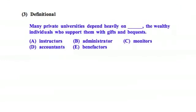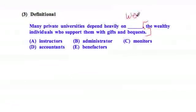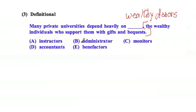The third type, definitional, is like a similar construction. For example: 'Many private universities depend heavily on blank, the wealthy individuals who support them with gifts and bequests.' The second part provides more information about the first part. So the blank refers to wealthy donors — the answer is 'benefactors.'